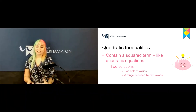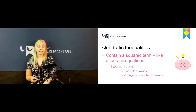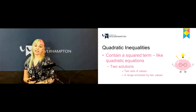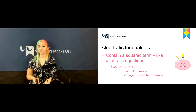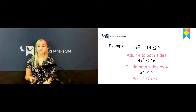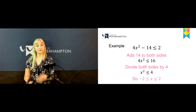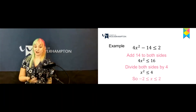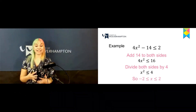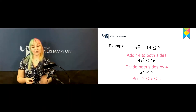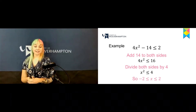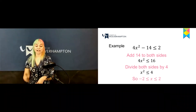We also have quadratic inequalities, which are a little different as they contain a squared term like a quadratic equation, and these usually provide two solutions — either two sets of values or a range. Looking at this example, we have 4x squared minus 14 is less than or equal to 2. Adding 14 to both sides gives 4x squared is less than or equal to 16. Dividing each side by 4 gives x squared is less than or equal to 4, so x is less than or equal to 2, or greater than or equal to minus 2.